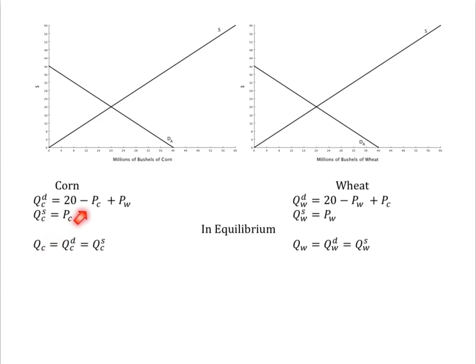We have demands for corn and demands for wheat, supply curves for corn and wheat. The equilibrium requirement that price equates quantity demanded and quantity supplied reduces our problem to two equations in two unknowns.